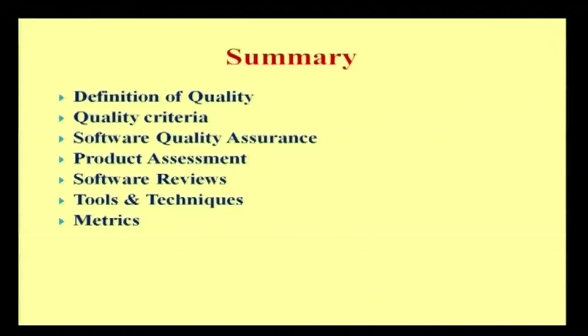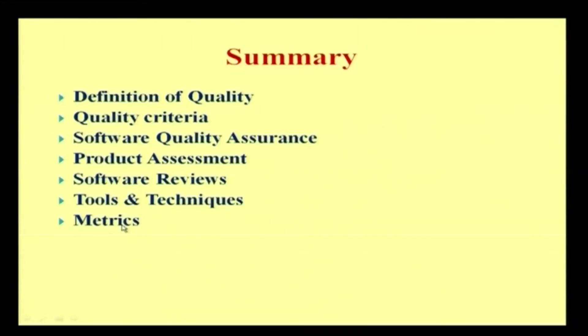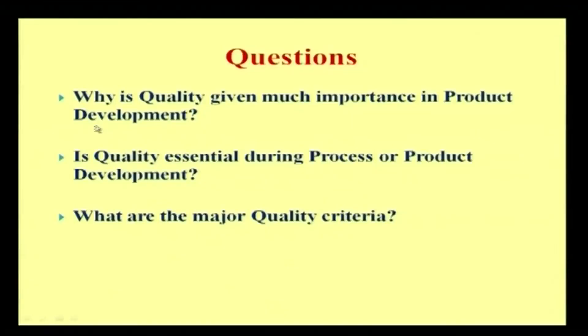In summary, we started with defining quality and the different quality criteria — the '-ty' words. We discussed what quality assurance is, explained product assessment, software reviews, and tools and techniques where defects might arise. We had a separate checklist for software reviews, tools, and techniques. Finally, metrics were explained. Questions for this session: Why is quality given much importance in product development? Is quality essential during process or product development — or both? What are the major quality criteria?